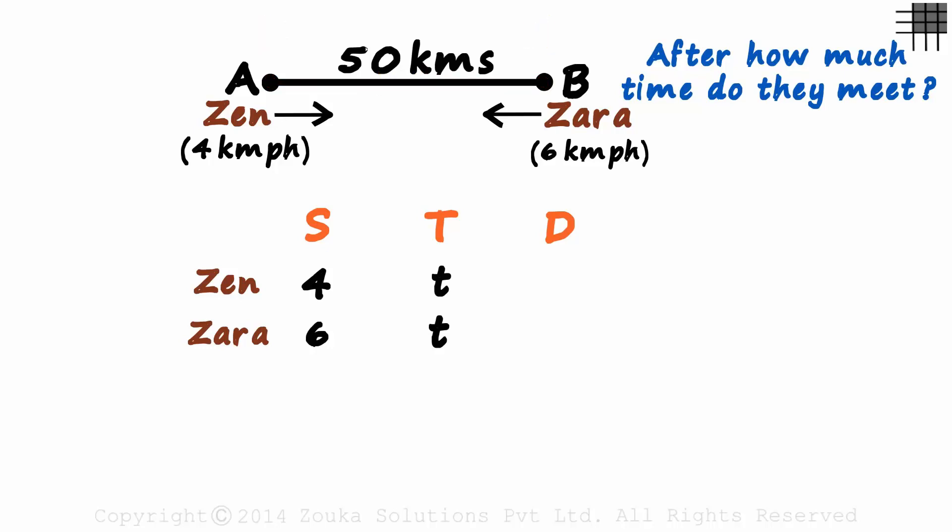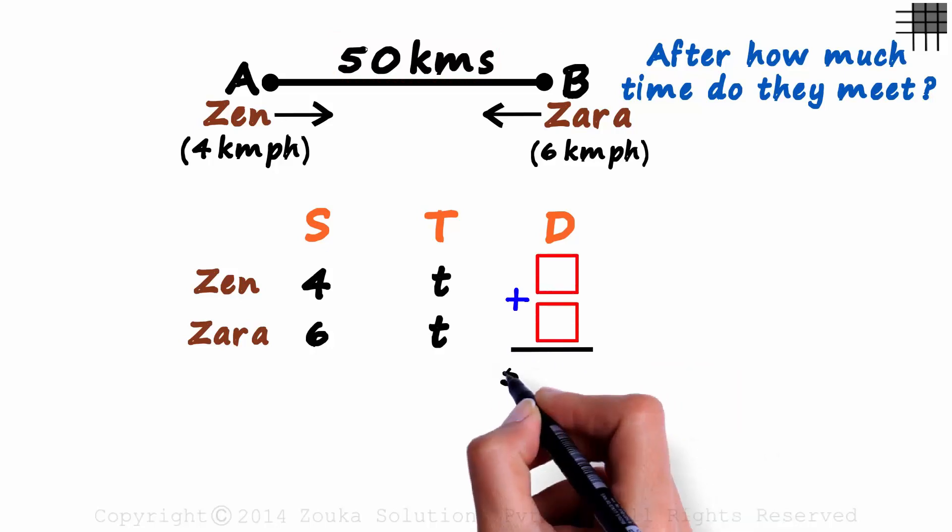No matter where they meet, the sum of the distances travelled by them will be equal to the distance between them. So the sum of these two distances will be 50 kilometers.